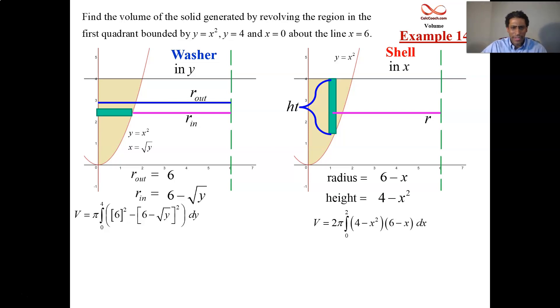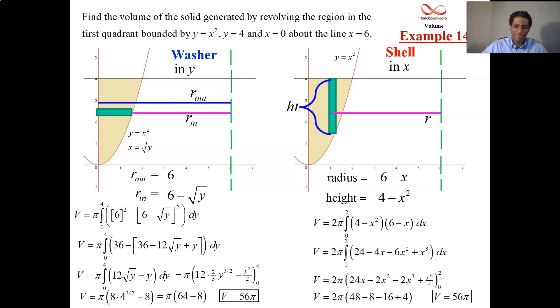Pause the video if you want to look at it in a second. We'll look at it, and we'll have a volume of 56 pi. Here's the full workup for the washer. Here's the full workup for the shell. I'm focusing my attention on the setup. That's the most difficult part. Let's do one more example in this video.